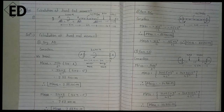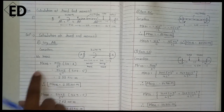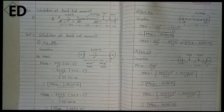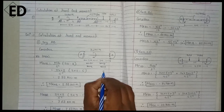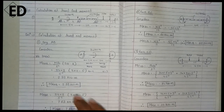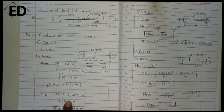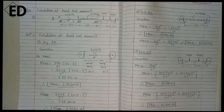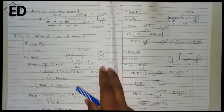So this is the fixed end moment from A to B. Now for calculating the fixed end moment from B to A, for A equals 3 and B equals 2, just put this value into the equation and we get 6.6 kilonewton meters. So this is the fixed end moment from B to A — as simple as that.